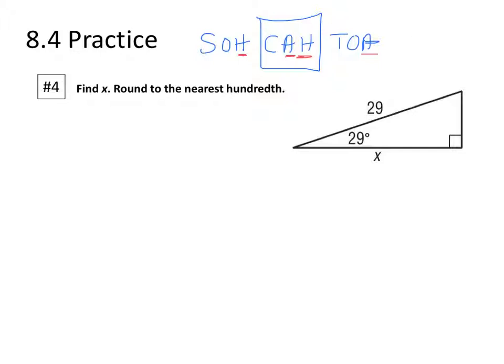Now when we're looking for a side length, we're going to use the ratios themselves. So we're going to say cosine of a given angle theta equals the adjacent side divided by the hypotenuse. And in our case, we've got the cosine of 29 degrees equals x adjacent over side length of 29.